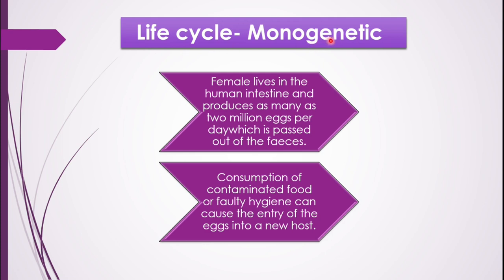Let us study the life cycle of Ascaris lumbricoides. The life cycle is monogenetic, meaning there is a single host — unlike Plasmodium which has a digenetic cycle with two hosts. The adult female roundworm lives in the human intestine and can produce as many as 2 million eggs per day, which are passed out through the feces.